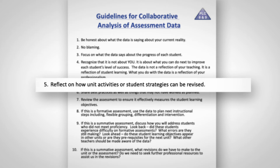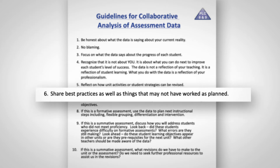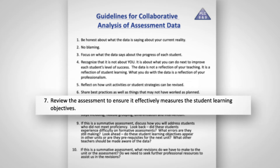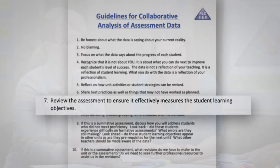Number five, we're going to reflect on how unit activities or strategies can be revised. Number six, we're going to share best practices as well as things that may not have worked out how we planned. Number seven, we're going to review the assessment to ensure it effectively measures the student learning objectives. Number eight, if there's formative assessment data, we want to make sure that we use the data to plan the next instructional steps, including flexible grouping, differentiation, and intervention.